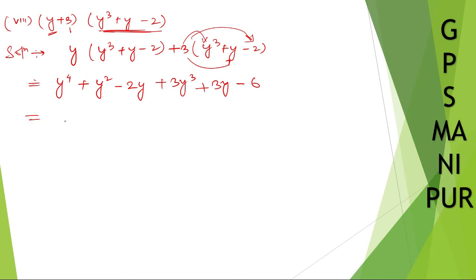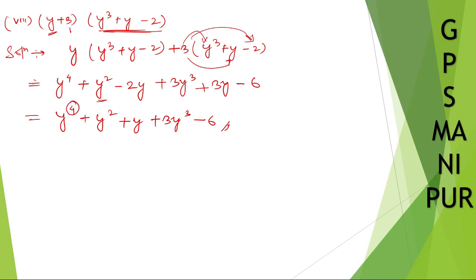Now let me write in order: y to the power 4, plus y squared, minus 2y plus 3y gives plus y, plus 3y cubed, minus 6. Now check the highest power: we have 4, 3, 2, 1, and 0. So the highest power is 4. Therefore degree is equal to 4.